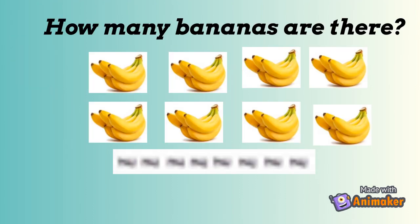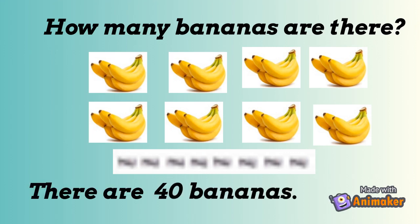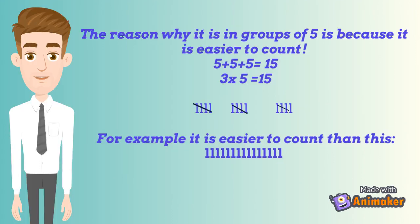How many bananas are there? Let us count by using tally marks. There are 40 bananas. The reason why it is in groups of 5 is because it is easier to count. 5 plus 5 plus 5 equals 15, or 3 multiplied by 5 equals 15. For example, it is easier to count than counting all from 1 to 15.